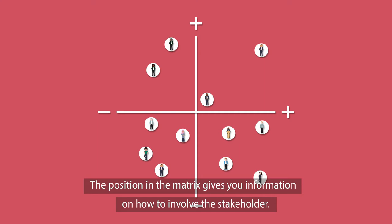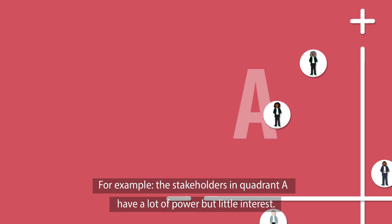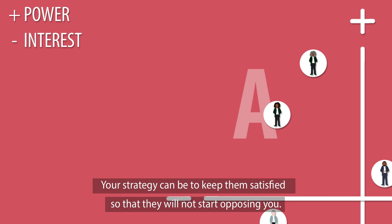The position in the matrix gives you information on how to involve the stakeholder. For example, the stakeholders in quadrant A have a lot of power but little interest. Your strategy can be to keep them satisfied so that they will not start opposing you. For those that support you, you can try to increase their interest so they become powerful supporters of your proposal.